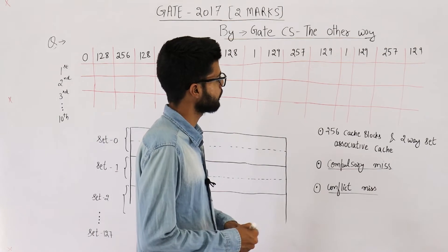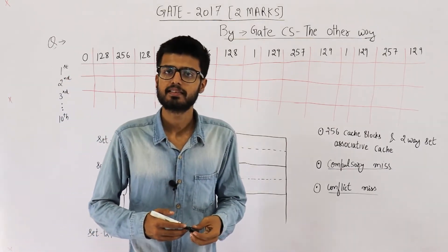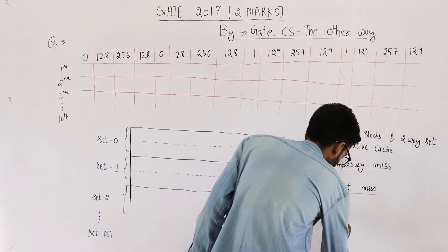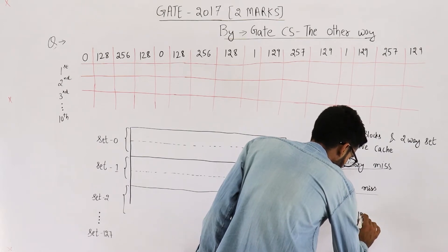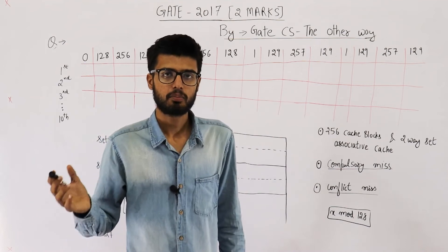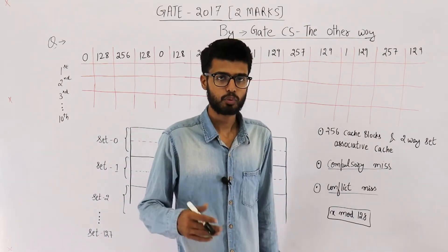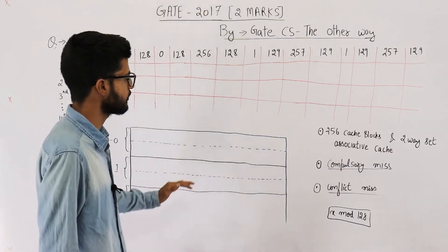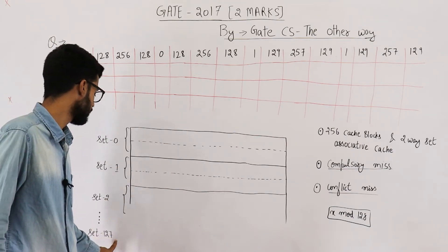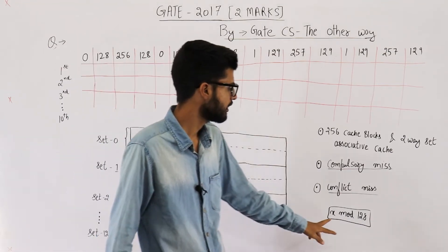Whenever some memory block is accessed, where will we place it in the cache? The formula is: if address number x is referred, it goes to set number x mod 128, because in total we have 128 sets. Multiple blocks can be mapped into these 128 sets — more than 128 blocks map onto 128 sets, which is why the mapping repeats. Block number 0 goes to set 0, block 1 to set 1, and so on up to block 127. Block number 128 starts again from set 0. That's how we get this mod formula.